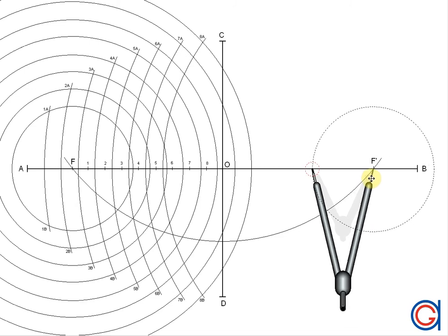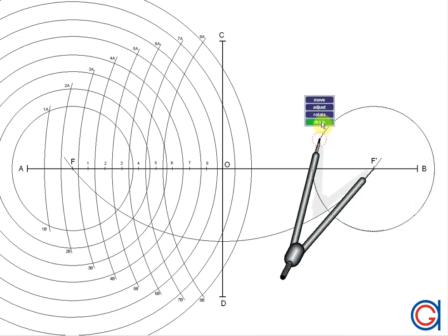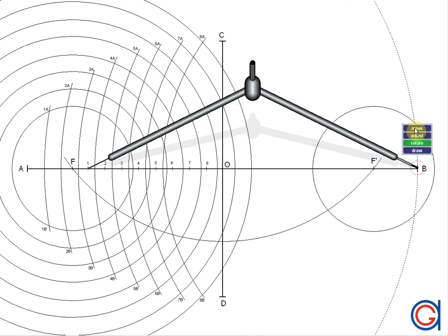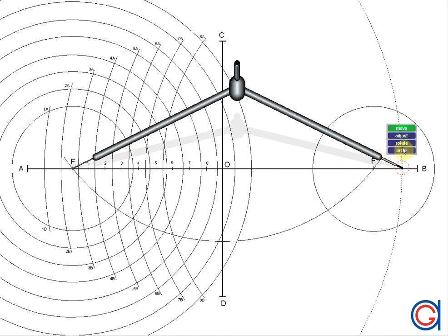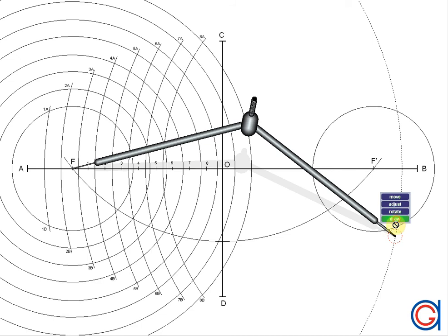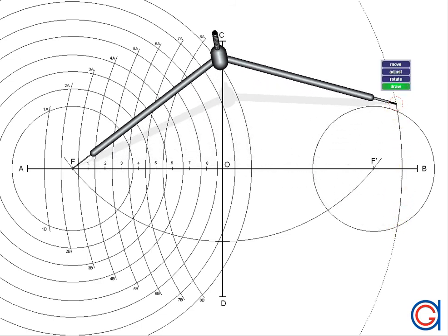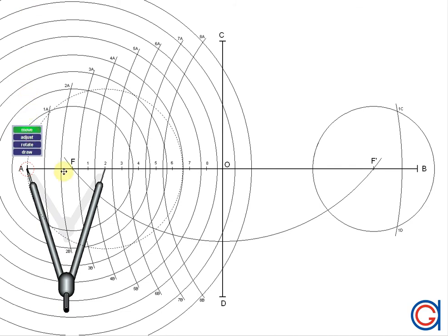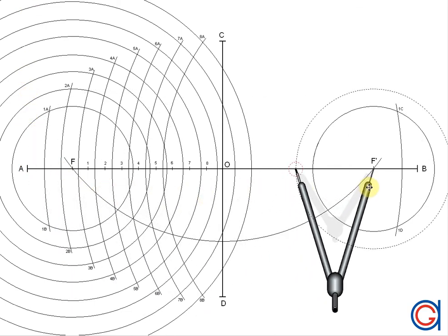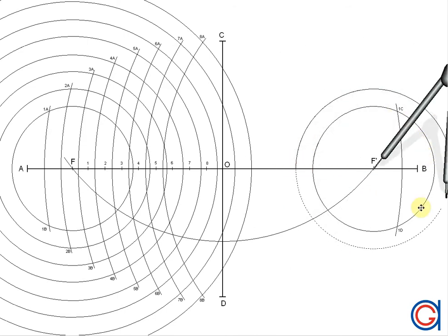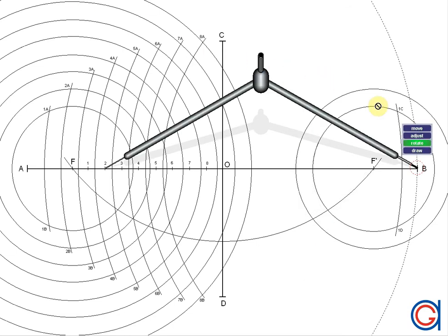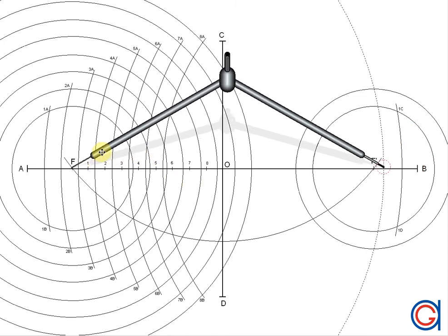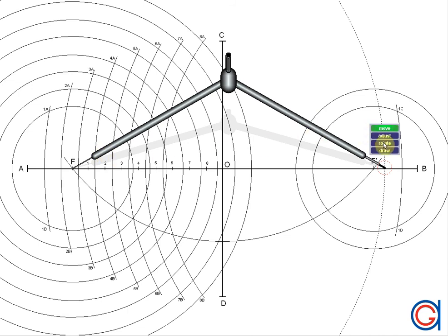With our compass set to the length A1 and set on our focal point F', we draw a circle. Now setting our compass to B1, we set our compass on focal point F' and scribe two arcs on the previously drawn circle. Now setting our compass to the length B2, we set our compass on focal point F' and scribe two arcs on the previously drawn circle.